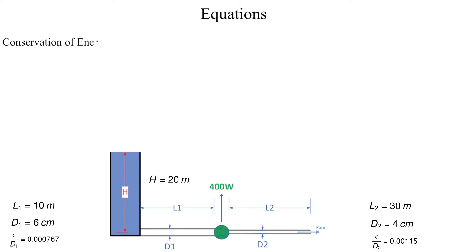We will be using conservation of energy to solve this example. First let's identify two points for the application of conservation of energy. We pick the top of the water level in the tank and label it as point A. For point B we choose the outlet of the second pipe which is discharging to atmosphere.